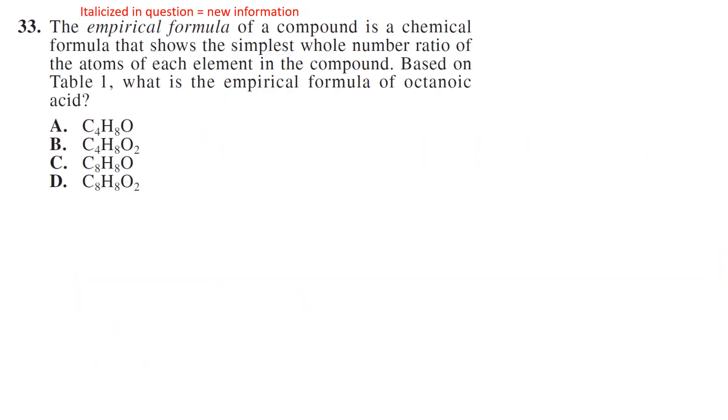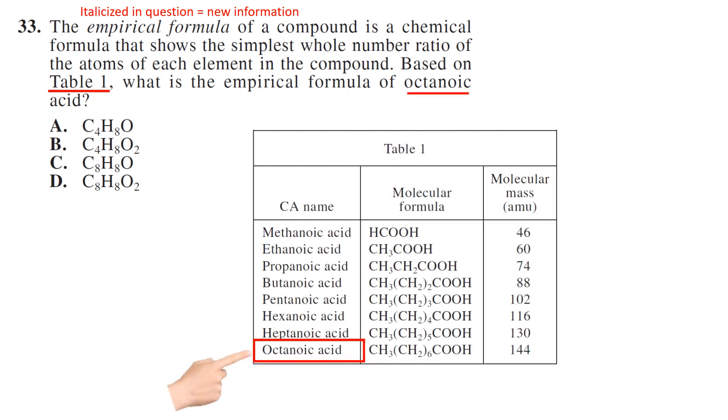Another italicized information: the empirical formula in a compound is the chemical formula that shows the simplest whole number ratio of atoms of each element in the compound. Based on table 1, what is the empirical formula of octanoic acid? This one's a little bit tricky because you have a simplest whole number ratio. So let's count how many carbons, hydrogens, and oxygens we have. So we have 8 carbons, 16 hydrogen, and 2 oxygen. Well, that's a ratio.